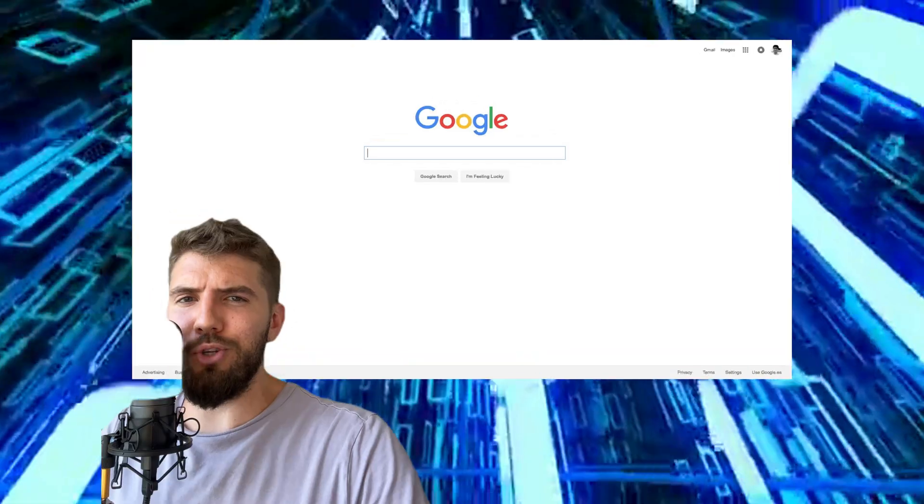Okay, now where is this computer code found? When Dr. James Gates took a look at a set of equations derived from string theory, he found binary code, error correcting code used for compressing data on a computer. A sequence of ones and zeros, the same code that is used by popular search engines.